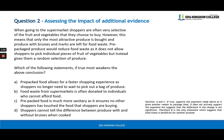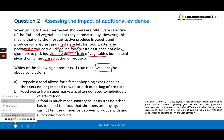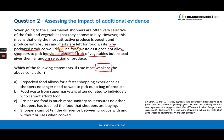Assessing the impact of additional evidence. If we look at this, the information provided, the main conclusion is that pre-packaged produce in supermarkets would reduce food waste as it does not allow shoppers to pick individual pieces of fruit and vegetables but gives them a random selection. We want to find something that weakens this argument, weakens this argument that pre-packaged food makes less waste.